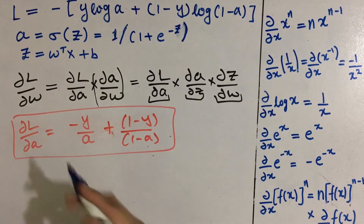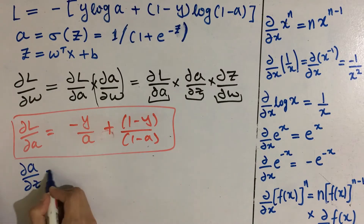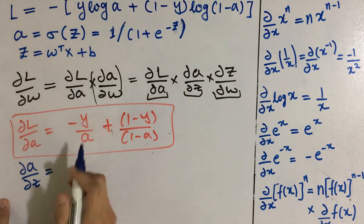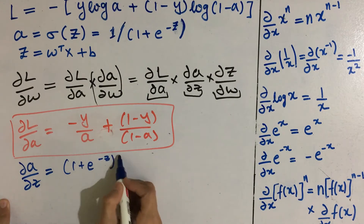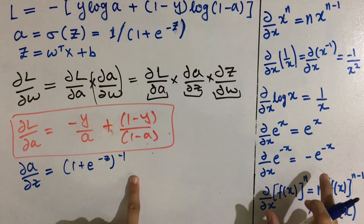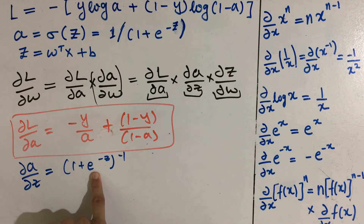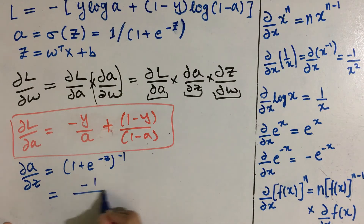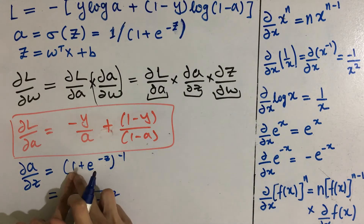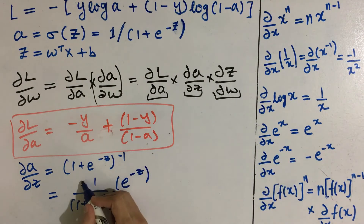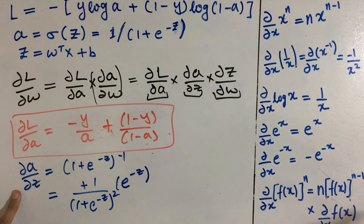Now let's compute del a by del z. We can write a as (1 + e^(−z))^(−1). Here n is −1 and (1 + e^(−z)) is f(x), so the derivative comes out to be minus of (−1) upon (1 + e^(−z))^2, and then we multiply by the derivative of the inner term e^(−z), which gives a factor of minus 1, making the sign positive. So del a by del z comes out to be e^(−z) upon (1 + e^(−z))^2.